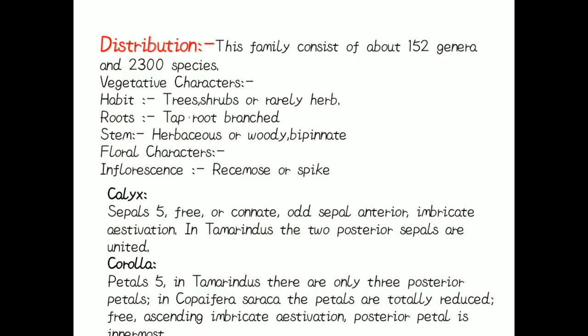Distribution: This family consists of about 152 genera and 2300 species. Vegetative characters — Habit: trees, shrubs, or rarely herbs. Root: tap root, branched. Stem: herbaceous, woody, or bipinnate.